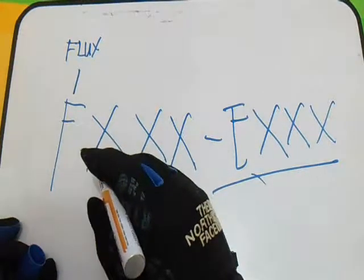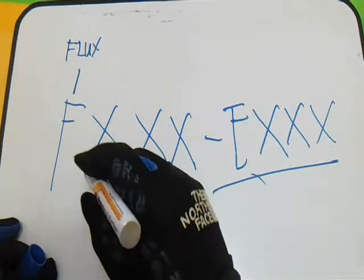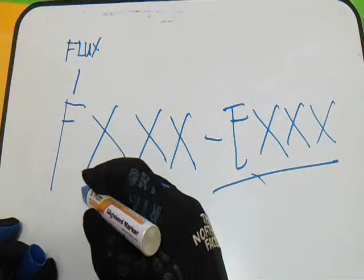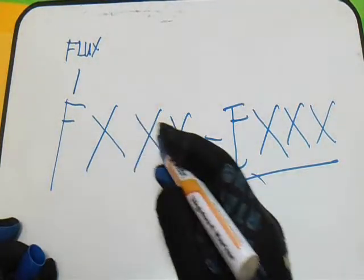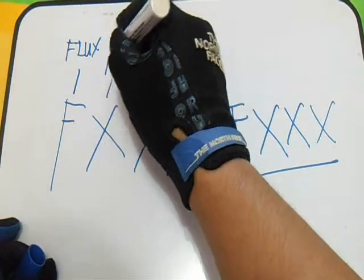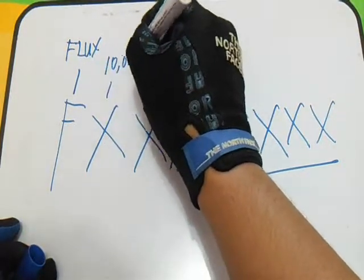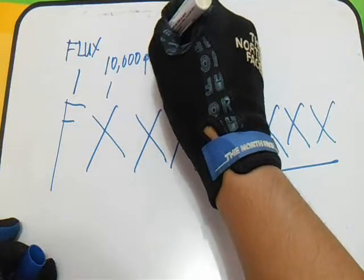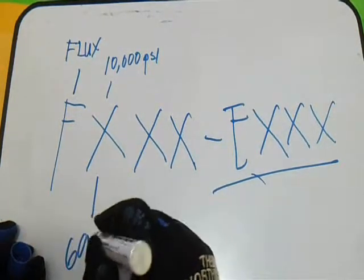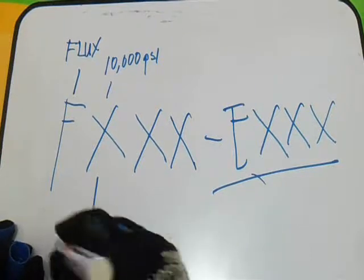The first X indicates the minimum tensile strength in increments of 10,000 psi or 69 MPa.